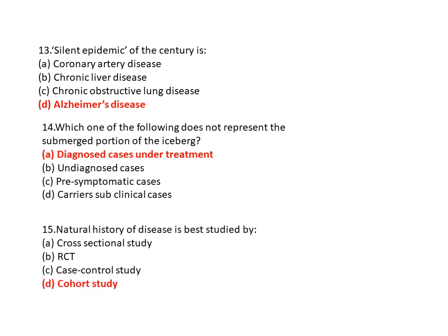Question 15: The natural history of disease is best studied by? So option D is the correct answer — cohort study. The natural history of disease is best studied by the cohort study.